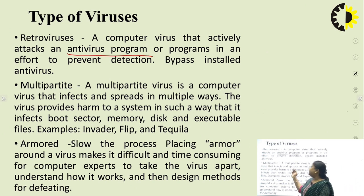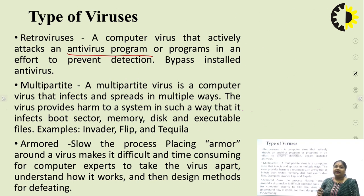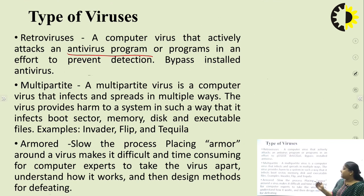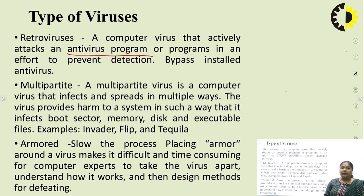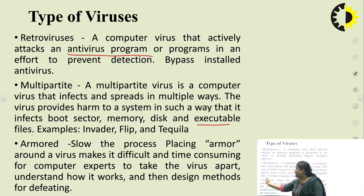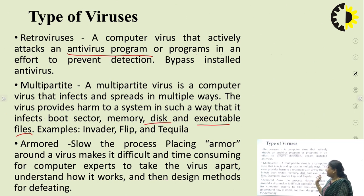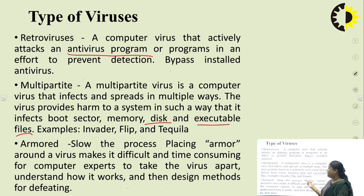The fourth type is multipartite. A multipartite virus is a computer virus that infects and spreads in multiple ways. It harms a system by infecting the boot sector, memory, disk, and executable files such as EXE files and DLLs. Examples include Invader, Flip, and Tequila. Next is the armored virus, which slows the process of virus detection by placing armor around itself, making it difficult and time-consuming for computer experts to analyze and design methods for defeating it.